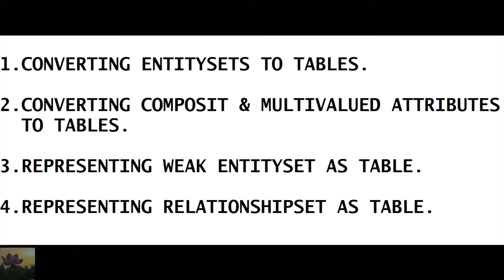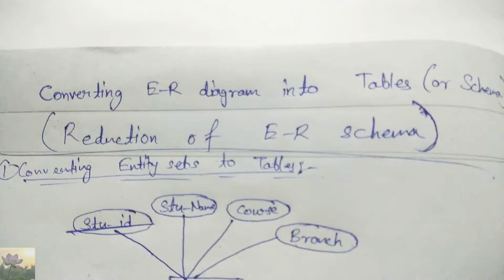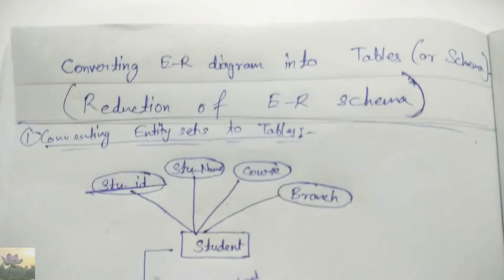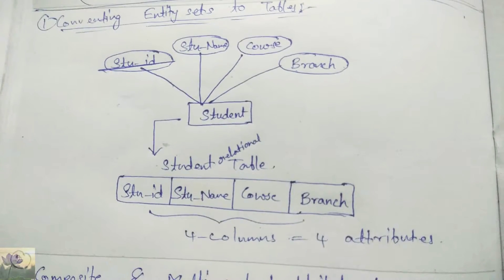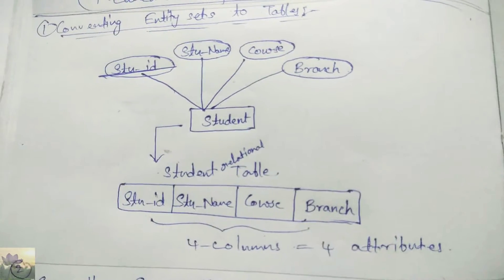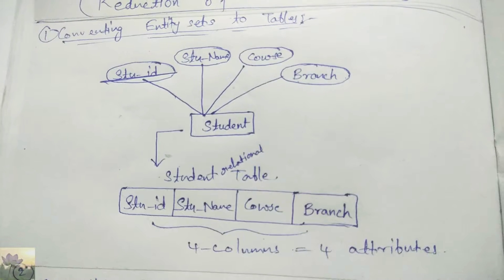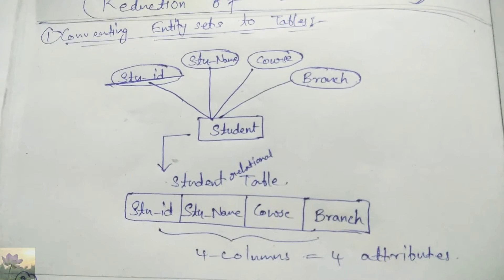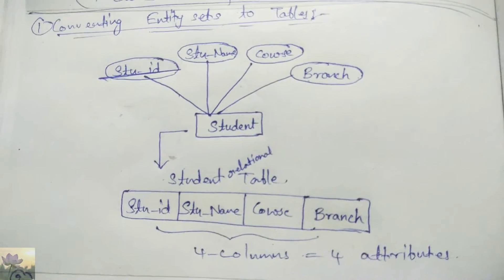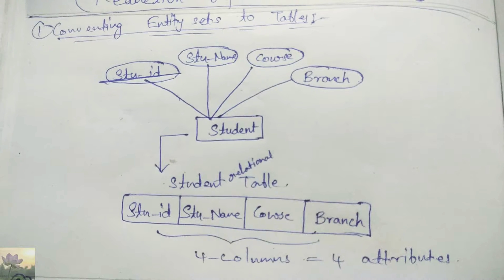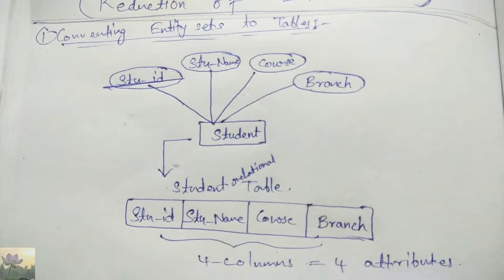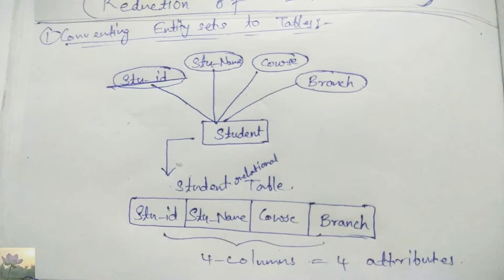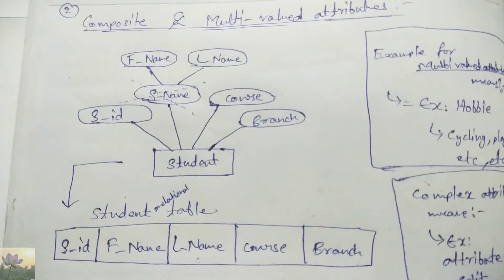Coming to the first conversion — converting entity sets to tables. As shown on the screen, the student entity set, represented by a rectangle shape, consists of different attributes: student ID, student name, course, and branch, shown in ellipse shapes. To form the student relationship table, we simply put all the attributes of the student entity set into a table with a single row consisting of four columns for the four attributes.